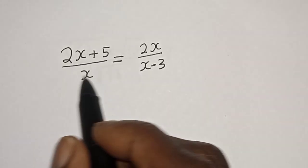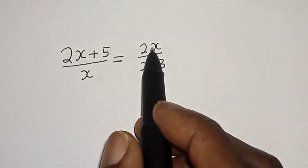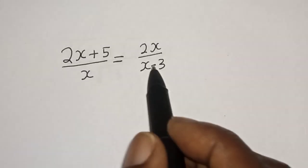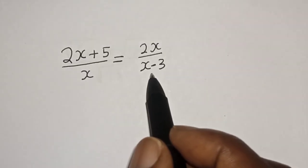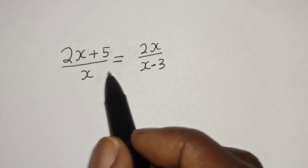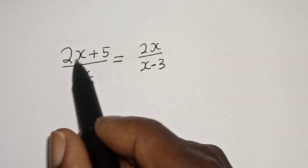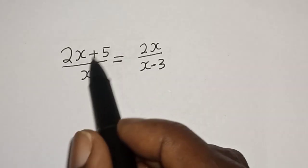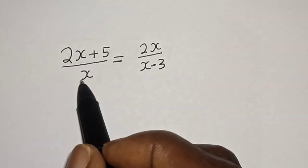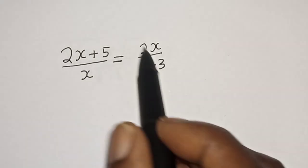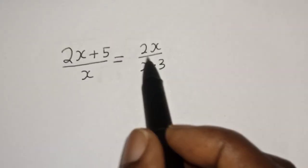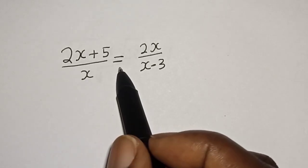2s plus 5 over s is equal to 2s over x minus 3. What is the value of s? Hi everyone, welcome to my class. In this class we want to find the value of s from this equation.